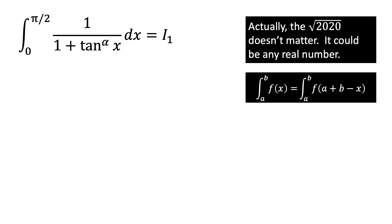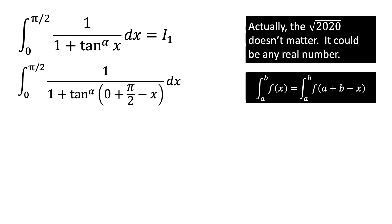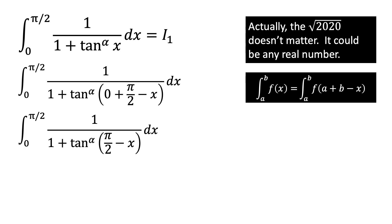Now, there is a little known property of integration which states that the integral from a to b of some function f of x is equal to the integral from a to b of f of a plus b minus x. In this instance, a is equal to 0 and b is equal to pi over 2. I can insert these values into the integral and I will get the integral from 0 to pi over 2 of 1 over 1 plus the tangent of pi over 2 minus x raised to the power of alpha.